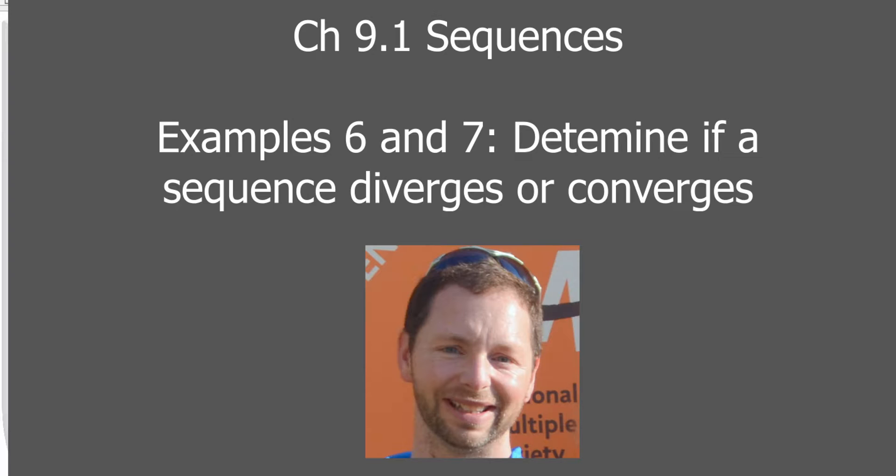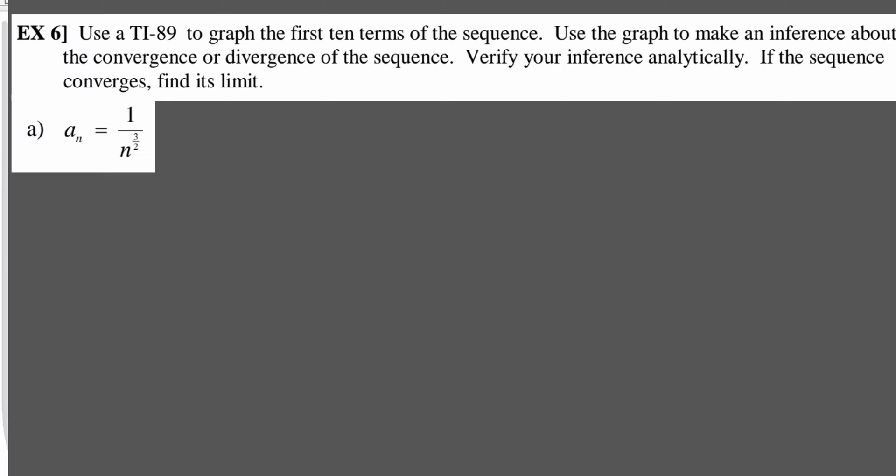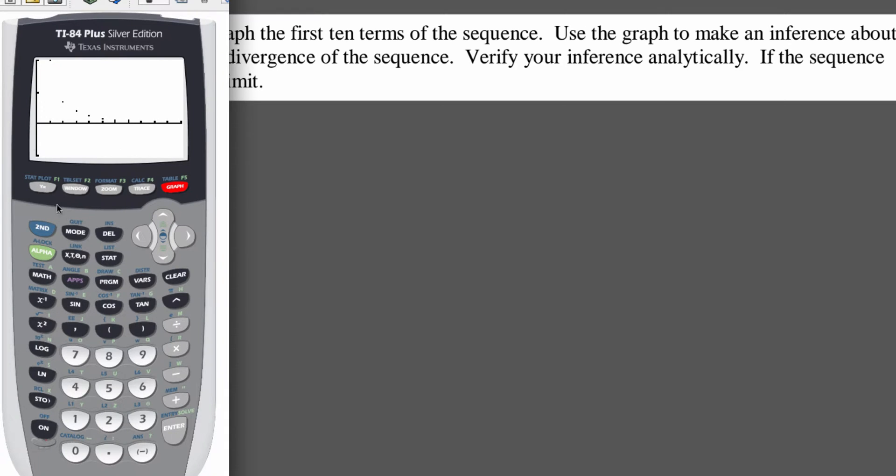We'll look at two examples. The first one says: use a TI-89 or any graphing calculator to graph the first 10 terms of the sequence. Use the graph to make an inference about the convergence or divergence of the sequence, verify your inference analytically, and if the sequence converges, find its limit. First, we want to use our graphing calculator to do the graph.